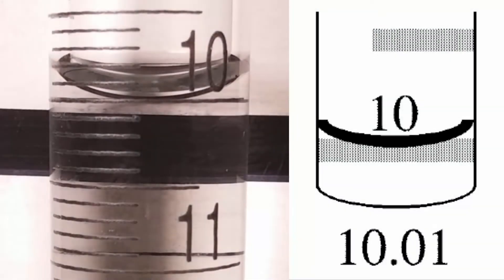In the fourth example, the meniscus is just below the top of the 10.00 line so the reading is 10.01.